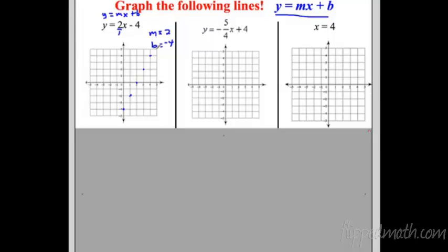Fill up the whole graph with dots, then use a straight edge to draw a line through them. It starts at negative 4 and has a slope of up 2 over 1. You can clearly see it started at negative 4 with a slope of 2.